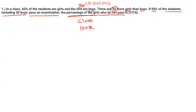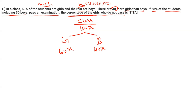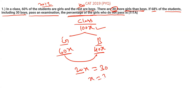Suppose there are 100x students in the class. We will use the same three-approach concept we used for the 2017 question — same concept but different values. So 60% girls means 60x girls, and 40% boys means 40x boys. The difference between girls and boys is 20x according to our assumption, but according to the question it is 30. So the value of x is 30 divided by 20, which is 1.5.